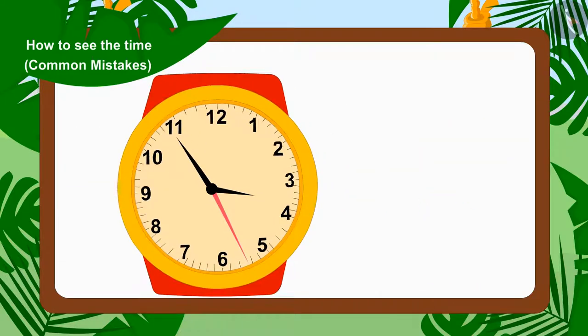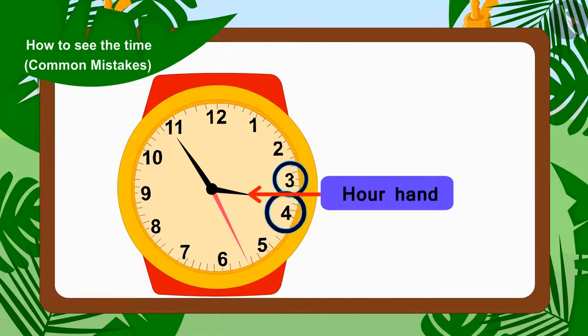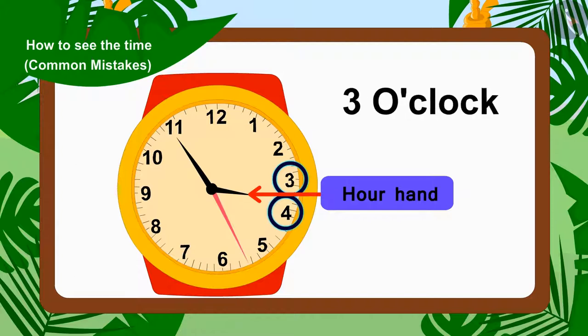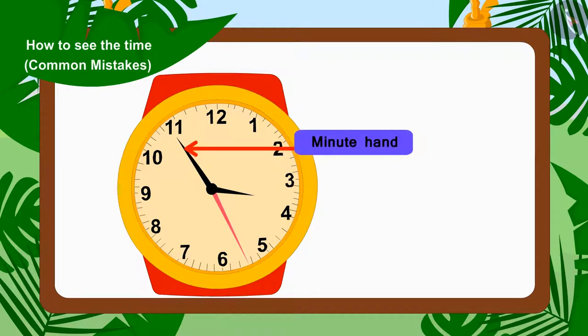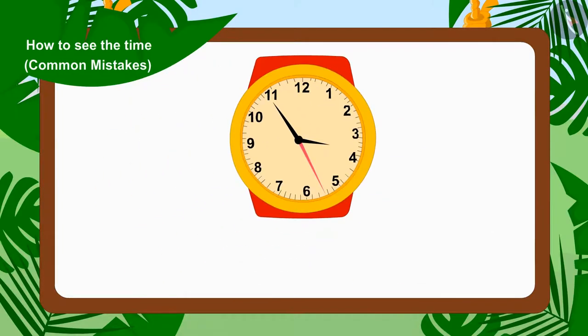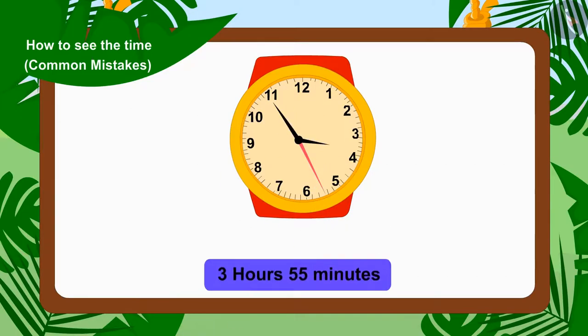That's correct. The hour needle is between 3 and 4, so it was past 3 o'clock. And the minute needle is on number 11, so 11 times 5 is 55 minutes. In this way, the time on the watch is 3 hours 55 minutes.